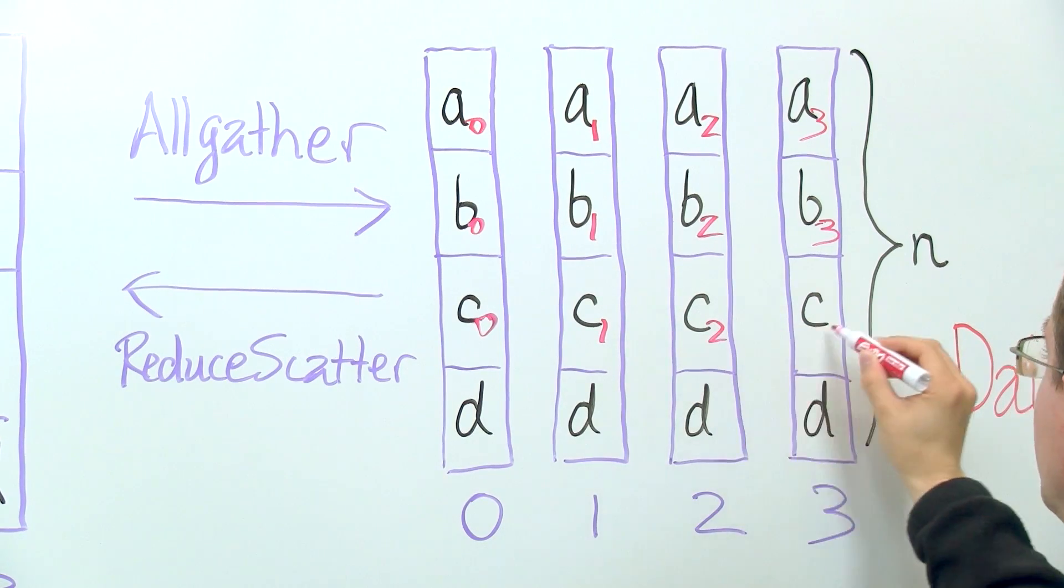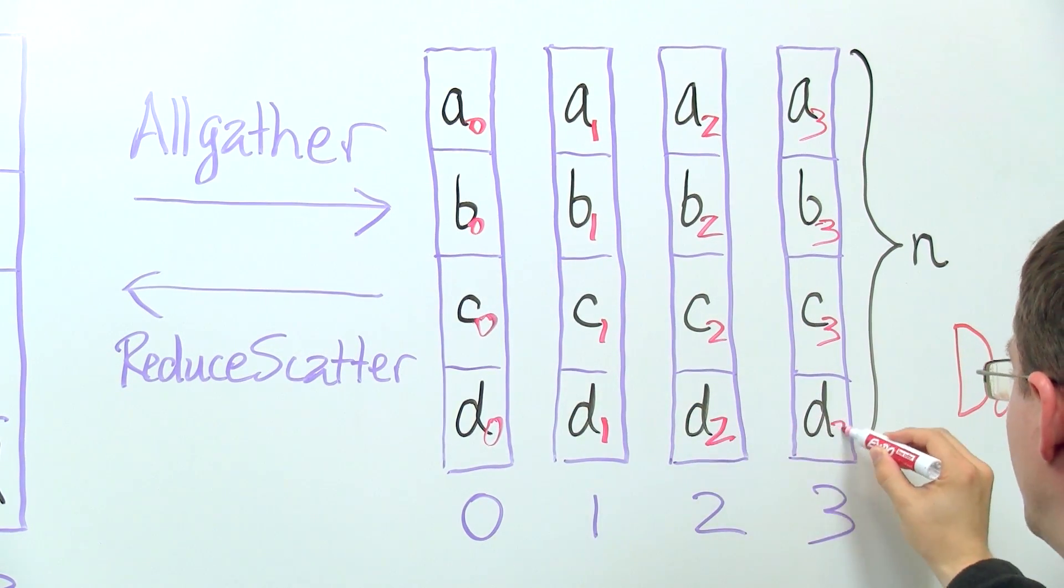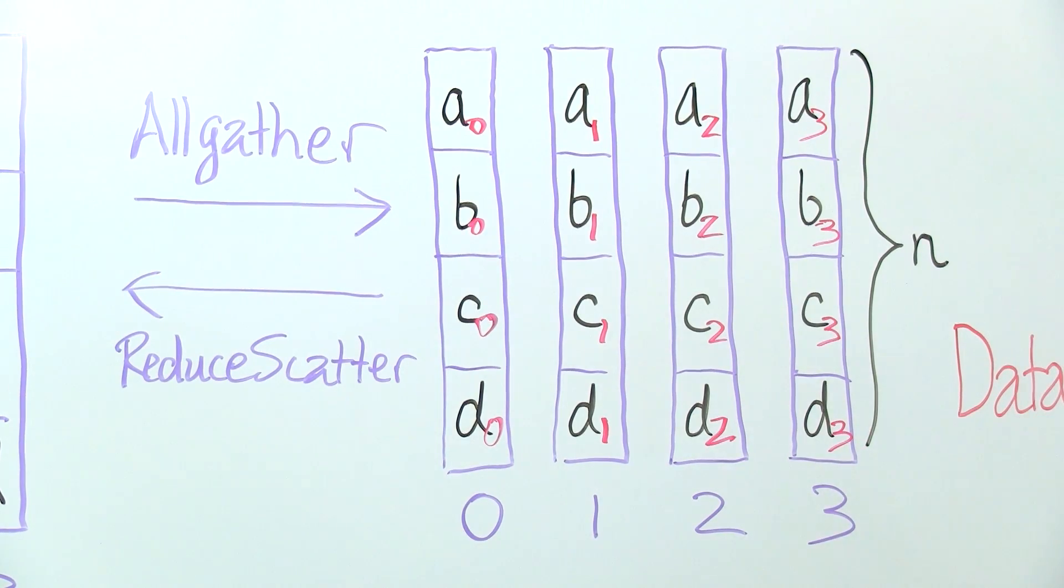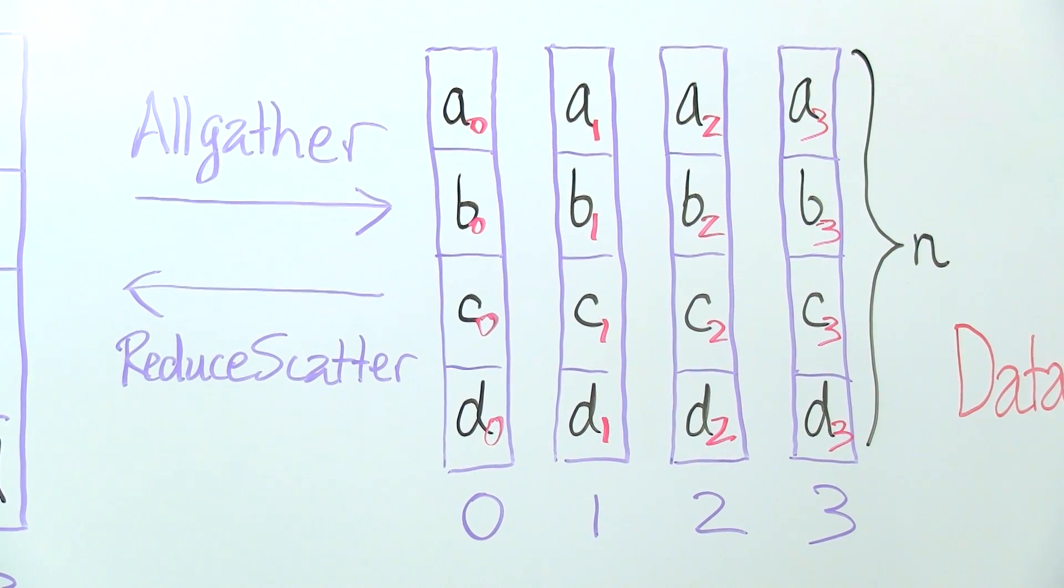What we want to do is sum each of these different contributions to A, B, C, and D, and then give the result of that summation to one process. You can think of going in the opposite direction to give process 0 the sum of A_0 through A_3, and then process 1 the sum of B_0 through B_3.